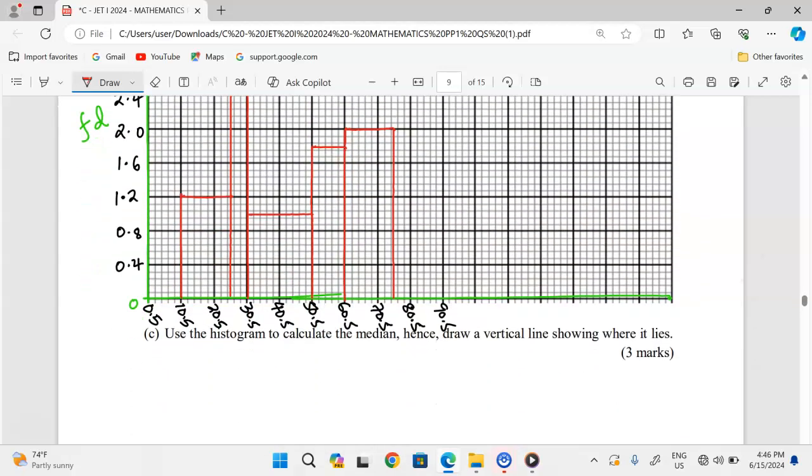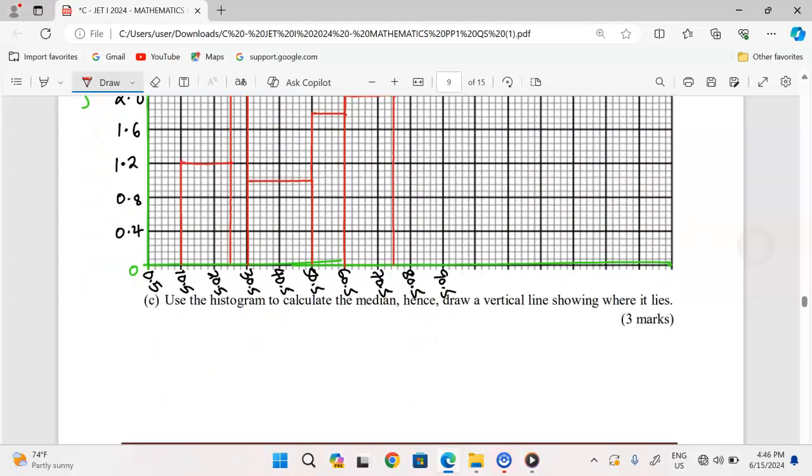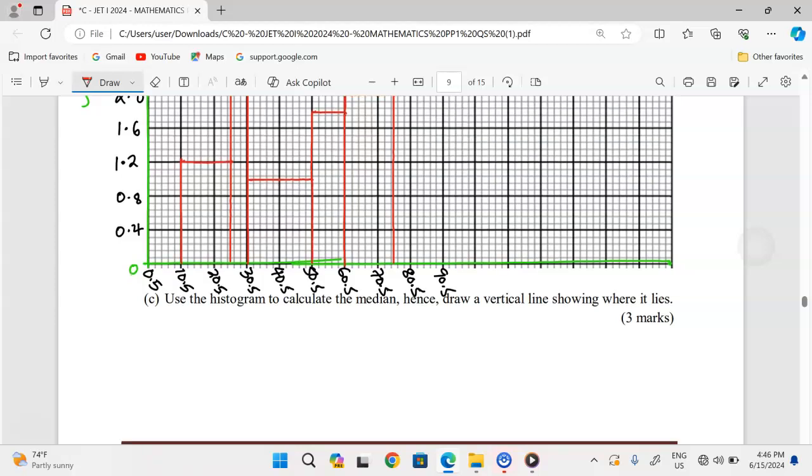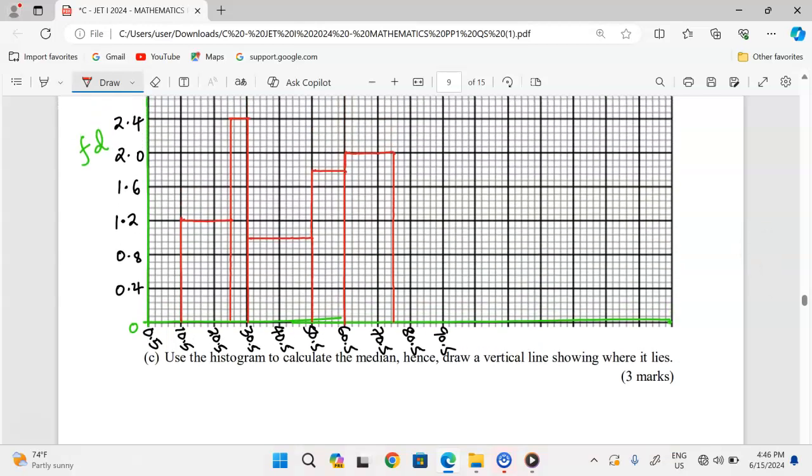The next question is about using the histogram to calculate the median, hence draw a vertical line showing where it lies. Let us now use the histogram to calculate our median. We should know that a median is the mark which is scored by the middle student.